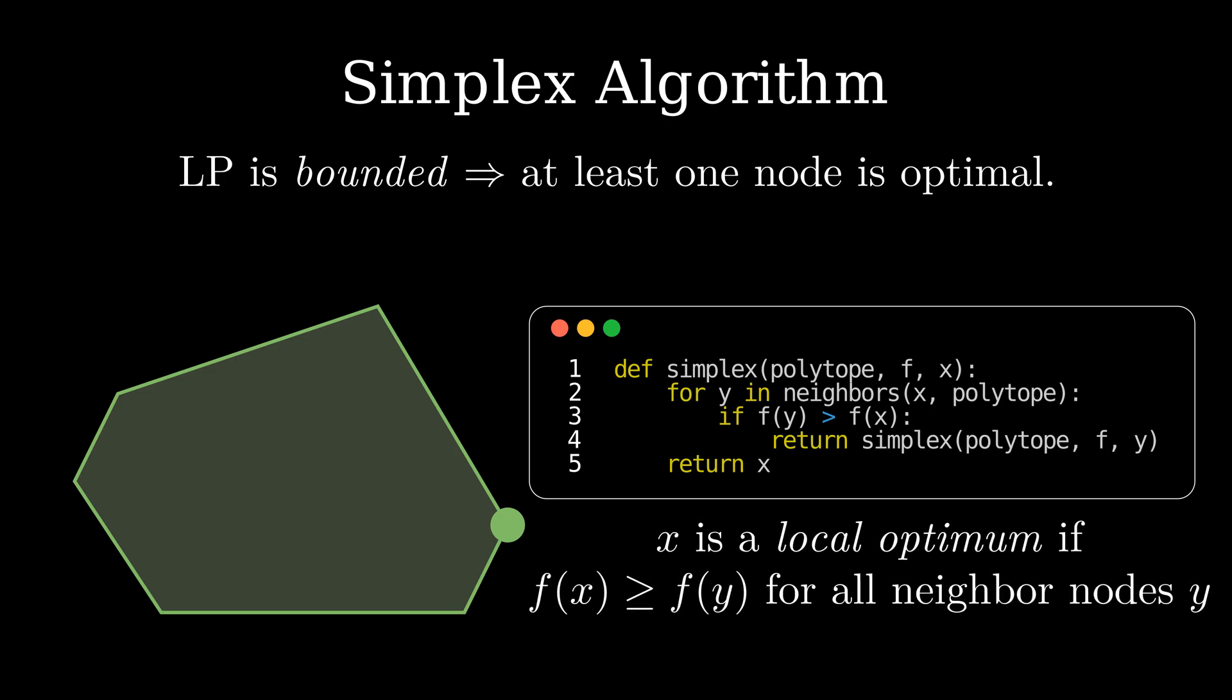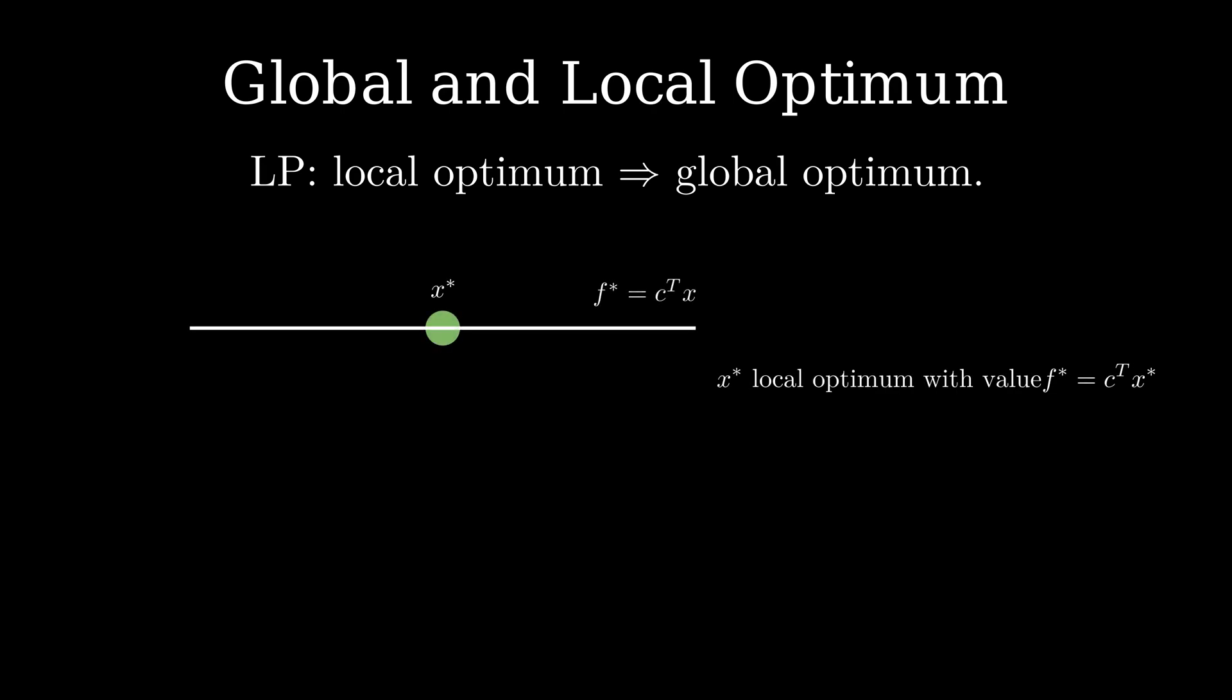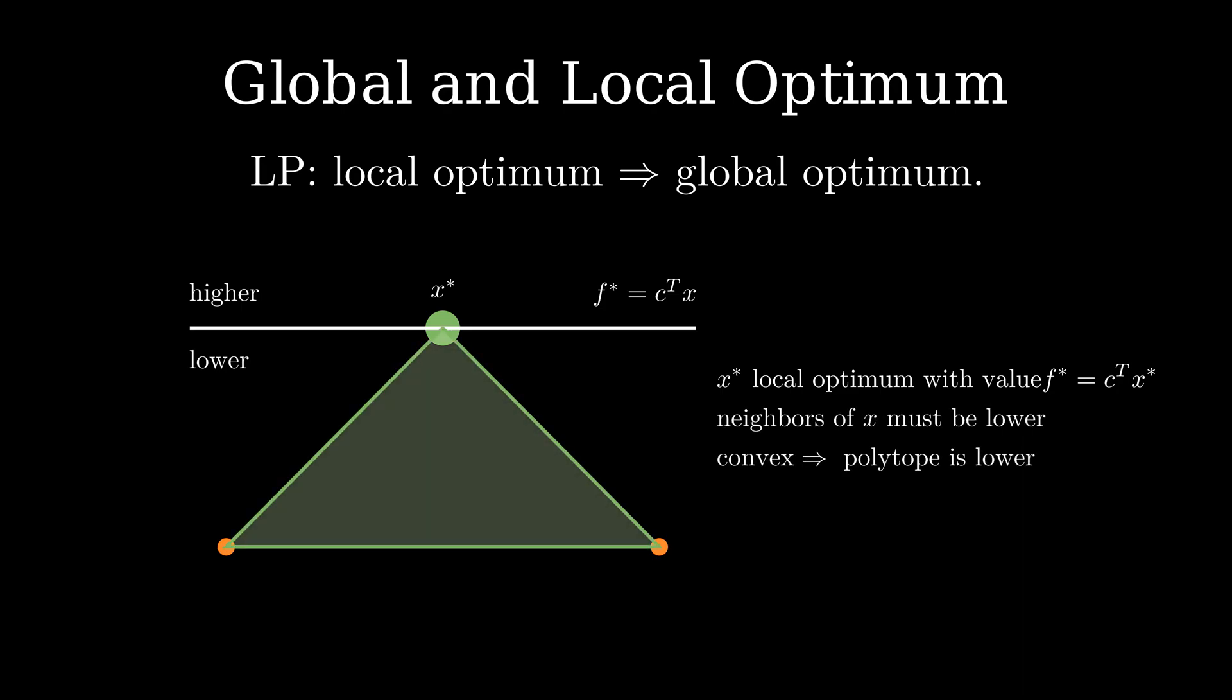The node returned by the simplex algorithm is a local optimum. It is at least as good as all its neighboring nodes. It is not that difficult to find a local optimum. However, for our LP we would like to find the best solution over all feasible points, the so-called global optimum. It turns out that for LPs every local optimum is also a global optimum. Why is this the case? Let x^* be a local optimum returned by the simplex algorithm. Consider the hyperplane that goes through x^*. On it, every point has the objective value f^*. It divides the space into two halves. Either the objective is higher or lower than f^*. Because x^* is a local optimum, all neighbors of node x^* must be on the lower side. Since the polytope is convex, in fact the whole polytope must be on the lower side of the hyperplane. Therefore, there can be no nodes on the other side of the hyperplane and x^* is a global optimum. This is generally true for convex functions.